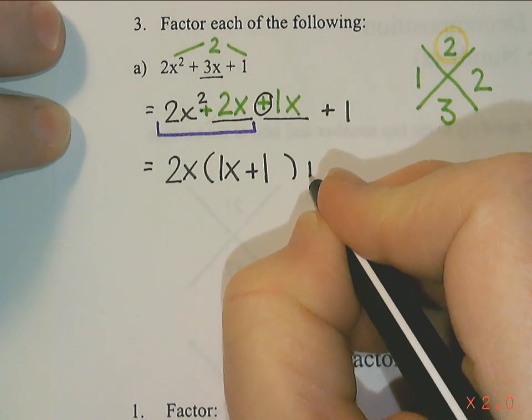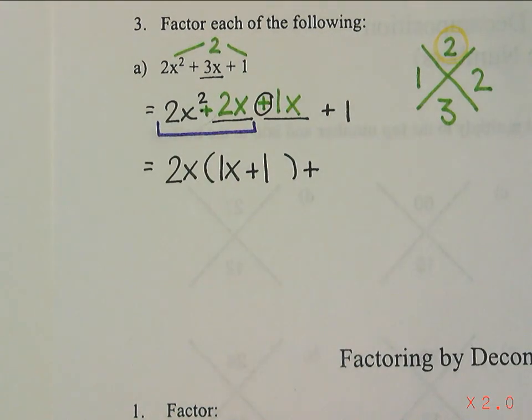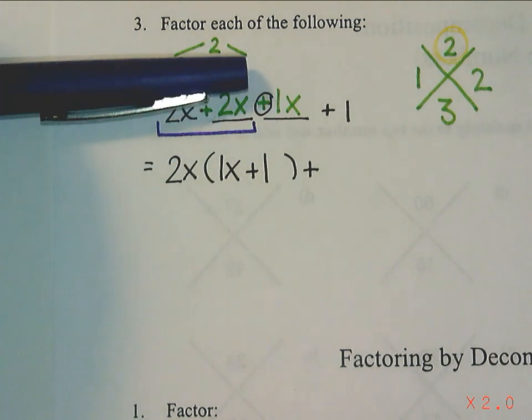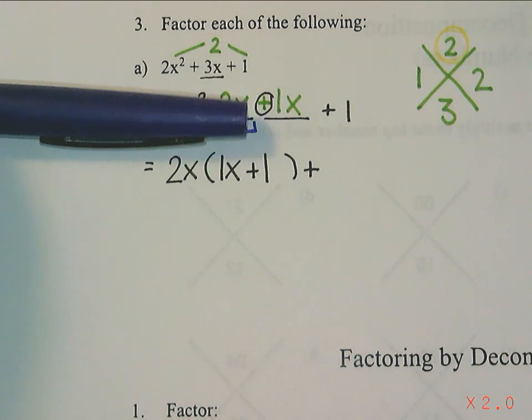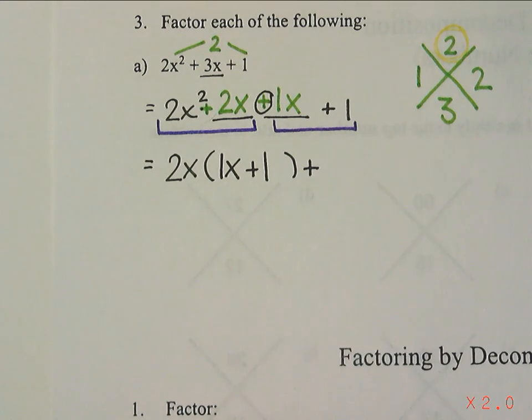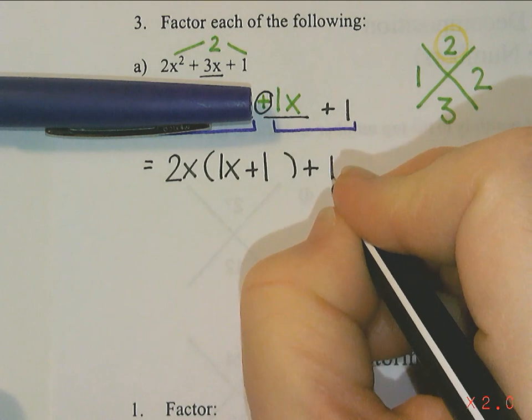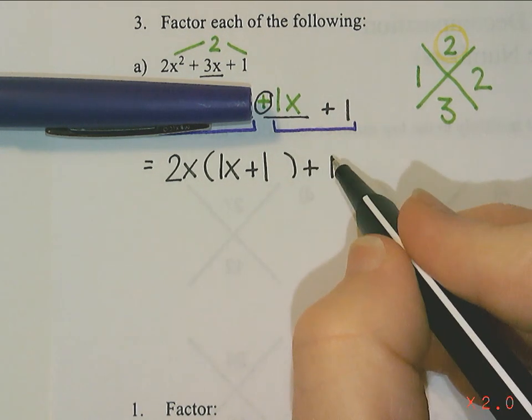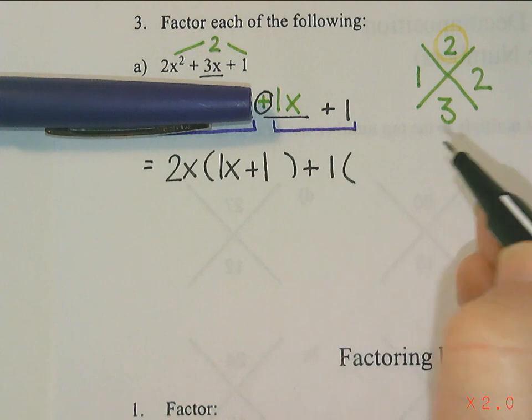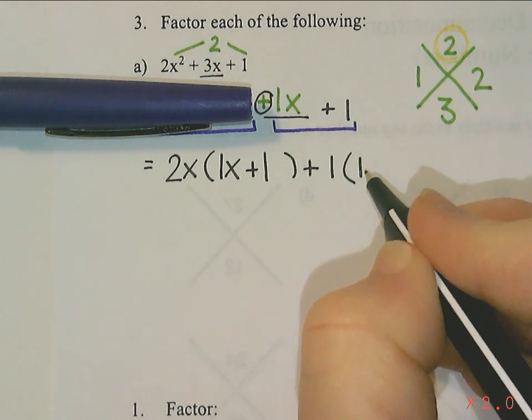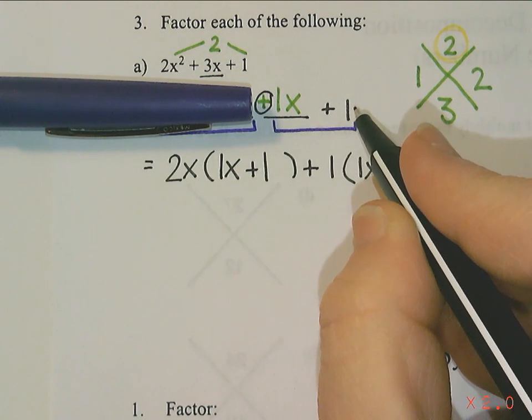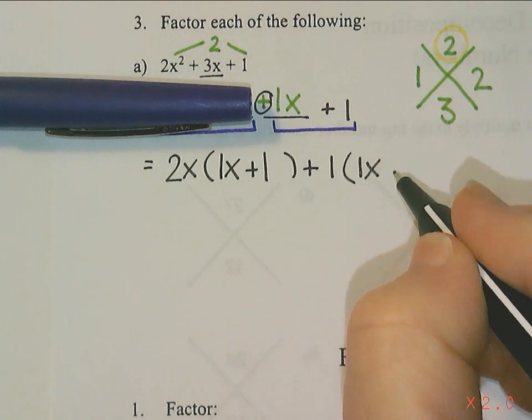All right, the sign that's here in the middle is always the sign that goes there. And we are going to focus on the last two terms which we are going to group together. So I'm going to try to ask myself what do 1x and 1 have in common. And the only thing that they would divide by is a 1, so 1x divided by 1 is x or 1x, and then 1 divided by 1 is 1.